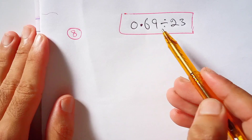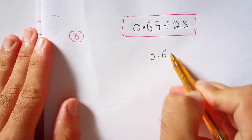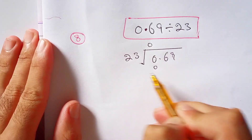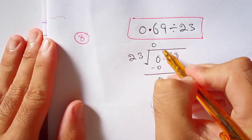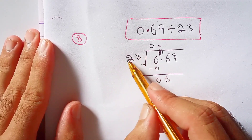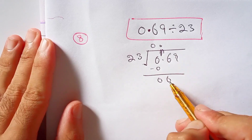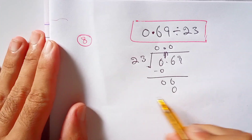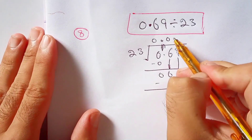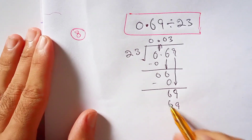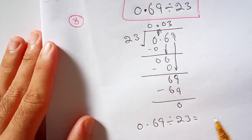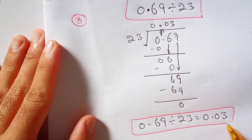In this question we have to divide 0.69 by 23. Here 0 is less than 23, so 23 times 0 is 0. Subtract 0 from 0, the remainder is 0. We will multiply 23 by such a number that their product is either equal to 6 or less than 6. 23 times 0 is 0. Subtract 0 from 6, the remainder is 6. Bring down 9 near 6 to make it 69. 3 times 3 is 9, 3 times 2 is 6. Subtract 69 from 69, the remainder is 0. So 0.69 divided by 23 is equal to 0.03. This is our final answer.